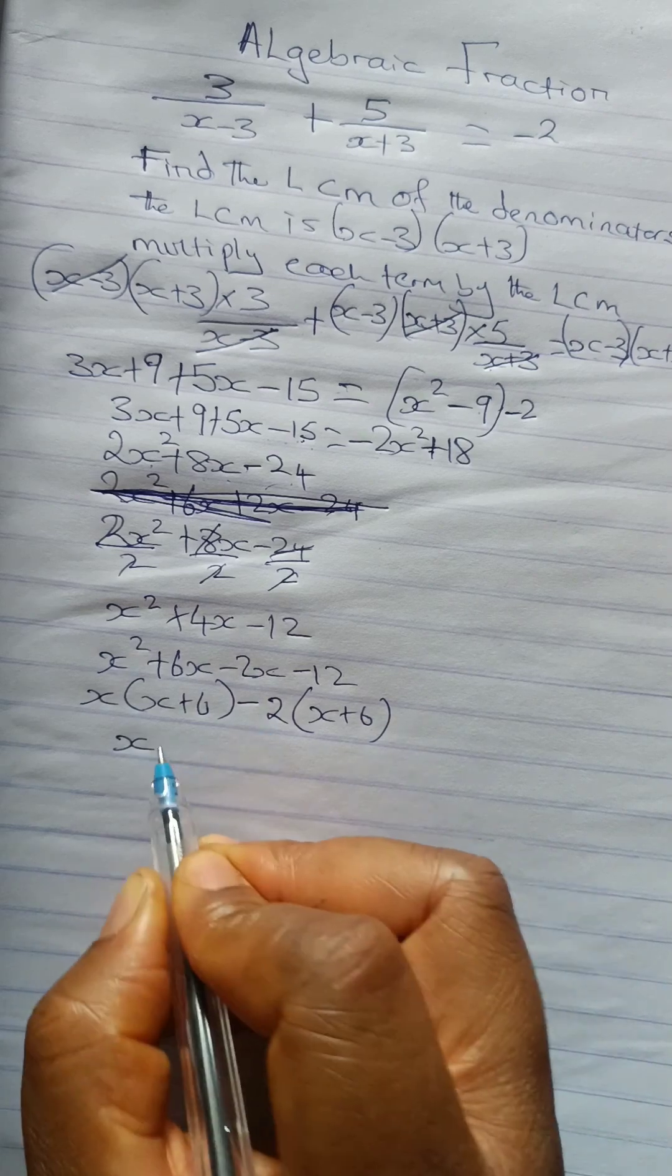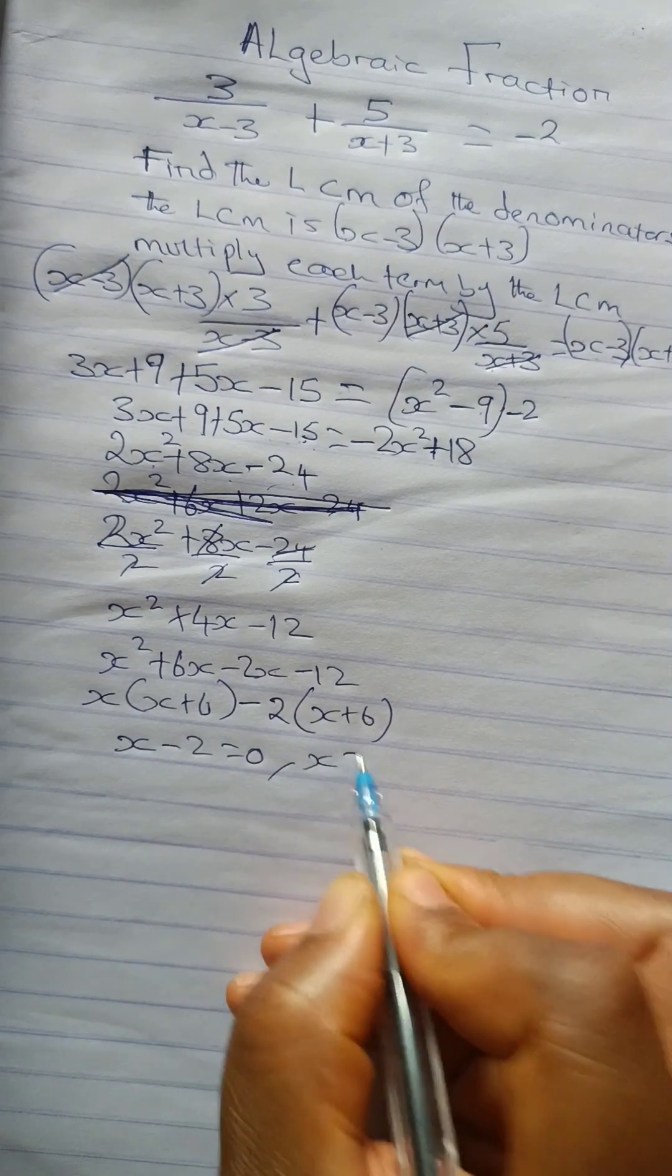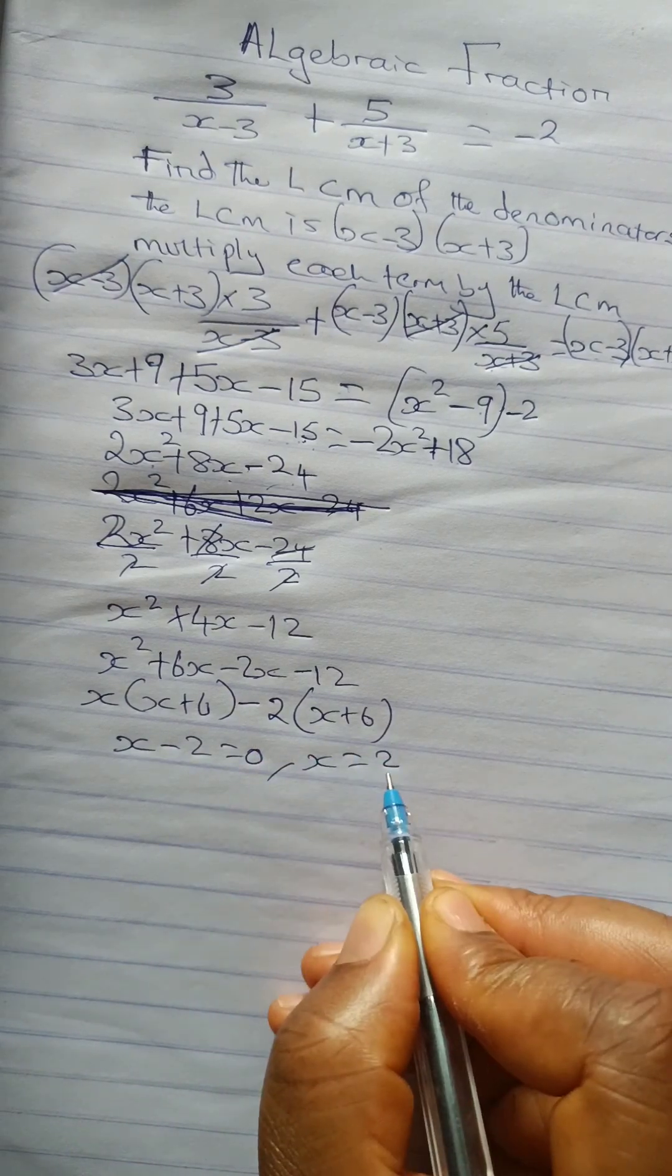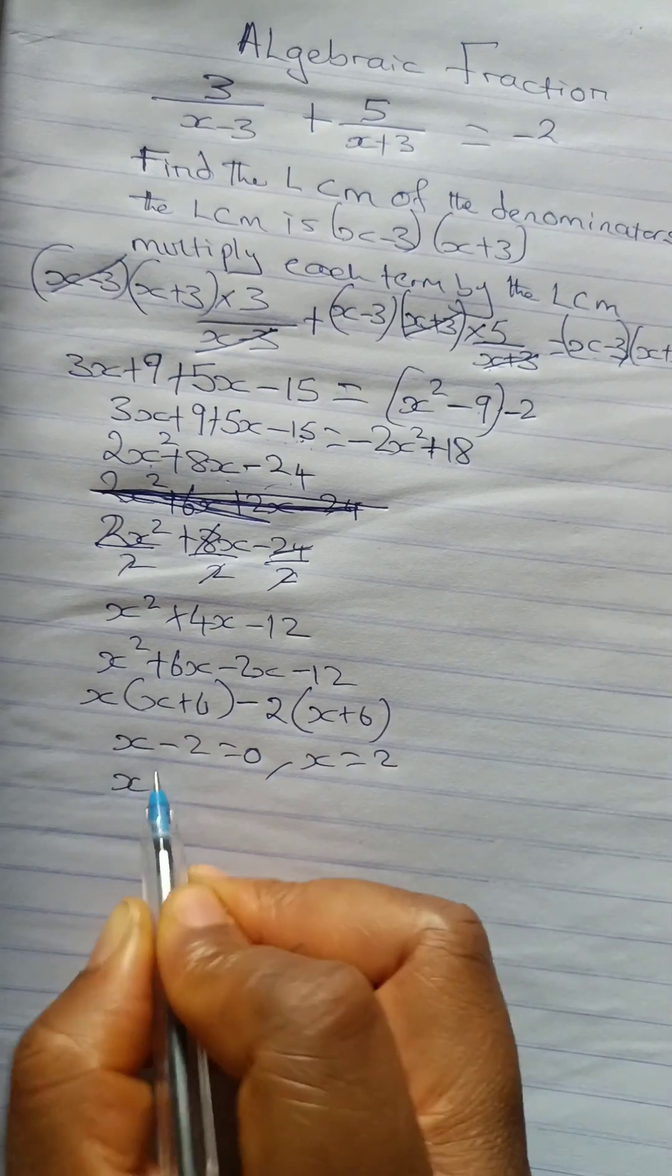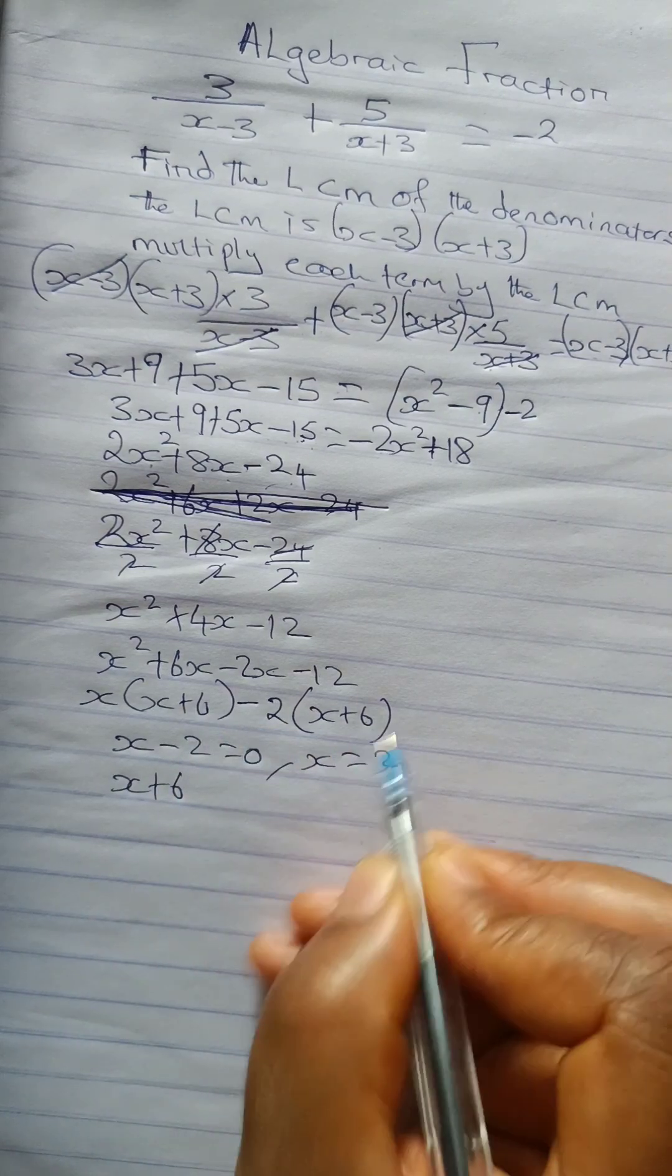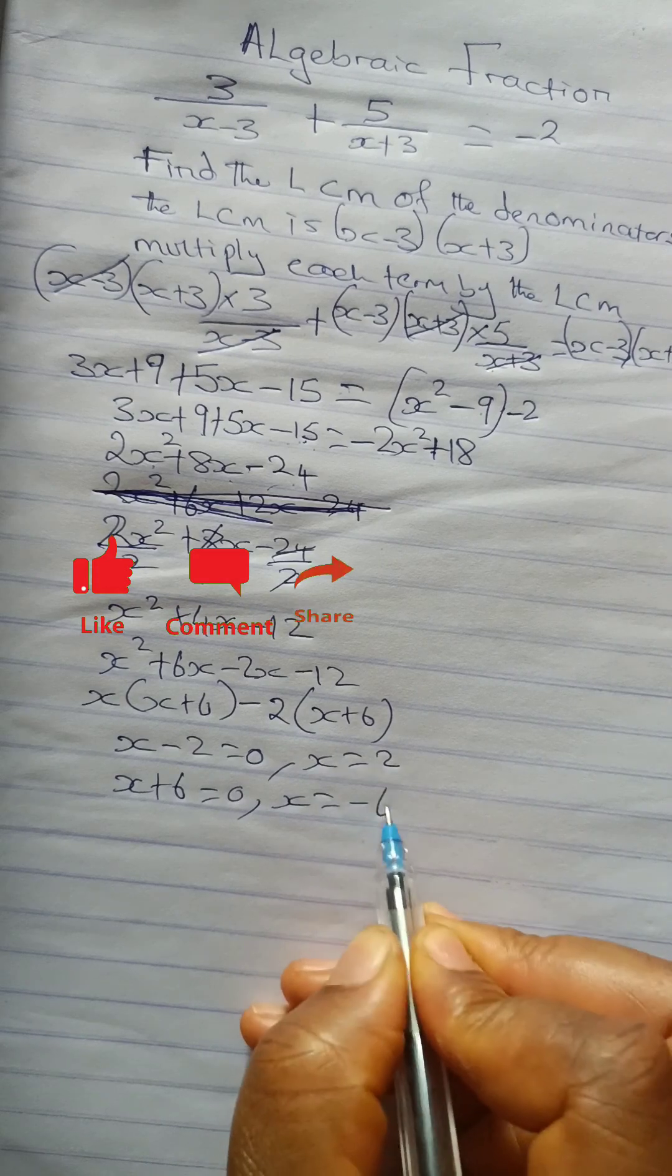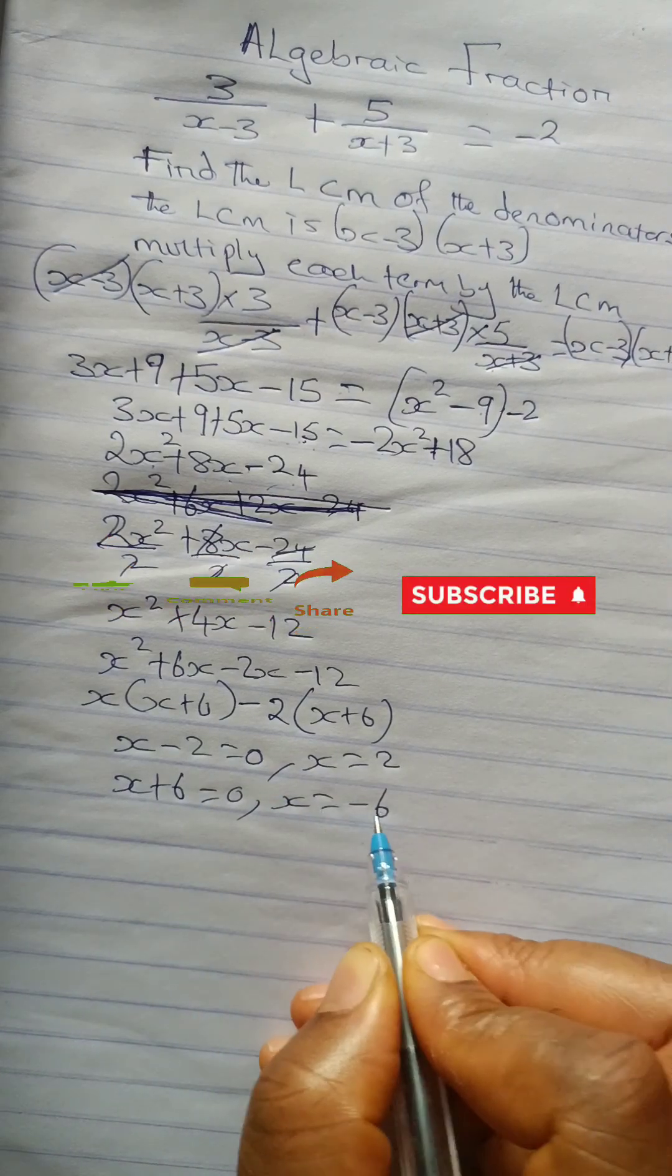our x minus 2 is equal to 0, which means x is equal to 2. Because the 2 crossing over the equal to sign becomes plus. And then we also have x plus 6, x plus 6 equal to 0, which means x is equal to minus 6. Plus 6 crossing over becomes minus 6.